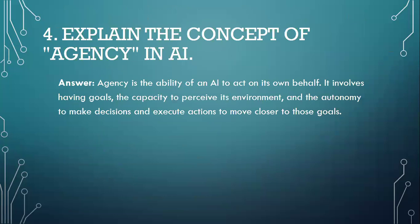Question number four: Explain the concept of agency in AI. Agency is the ability of an AI to act on its own behalf. It involves having a goal, the capacity to perceive its environment, and autonomy to make decisions and execute actions to move closer to those goals.